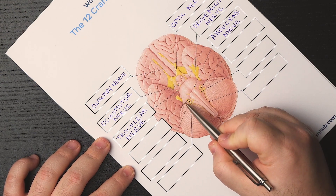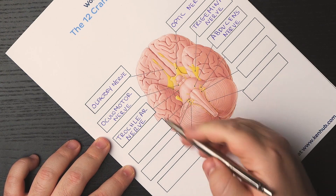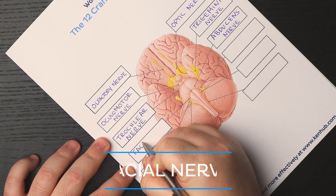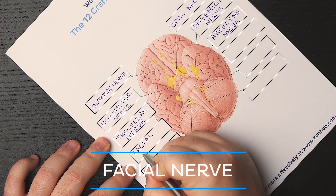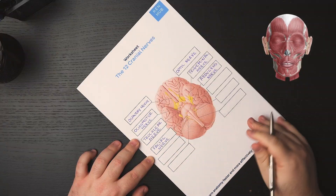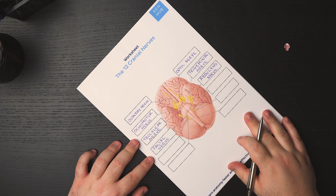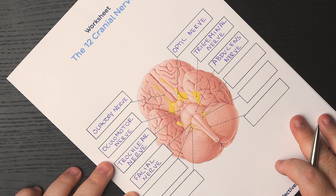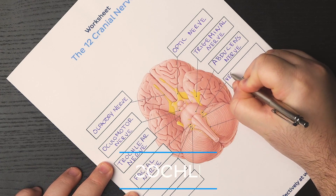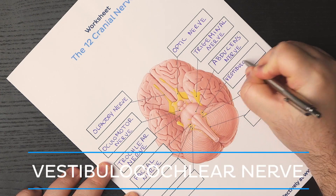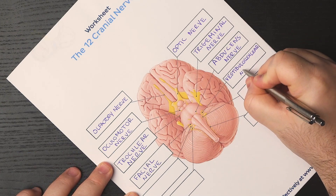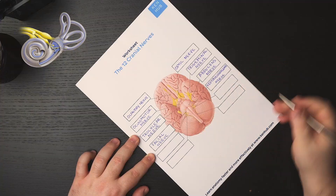The next one we can find here, lateral to the previous nerve, is cranial nerve 7, or the facial nerve. The facial nerve is a mixed nerve involved in facial expression, secretion of salivary and lacrimal glands, and taste sensation. Lateral and inferior to the facial nerve emerges cranial nerve 8, or the vestibulocochlear nerve. This is a sensory nerve responsible for hearing, balance, and motion.